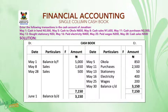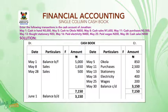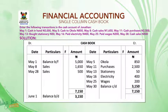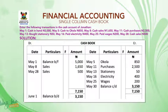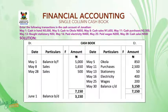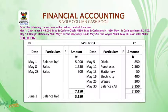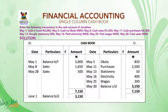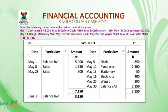Looking at the question — enter the following transactions in the cash account of Jonathan. May 1, cash in hand, 5,000 naira — this means the balance brought forward for that month, the cash at hand. It will be debited. On the debit side, under date write May 1; under particulars write 'balance brought forward'; and under amount write 5,000 naira. May 5, cash to Okola, 850 naira — cash to Okola simply means you pay to Okola, so you post it to the credit side because it is a payment. Under date write May 5; under particulars write 'Okola'; and under amount on the credit side write 850 naira.